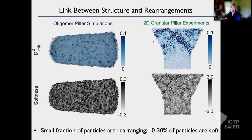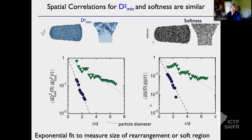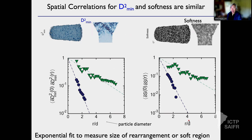We extract D-squared-min and train softness on that. The size of rearrangements can be estimated from spatial correlations of D-squared-min — it decays exponentially and you pull out a decay length. The softness also decays exponentially on the scale of a particle diameter. For these six systems, plotted as a function of particle diameter, we can plot the ratio of the size of a rearrangement to the size of the spatial correlations of softness. What you see is that this ratio is really tightly distributed around one.